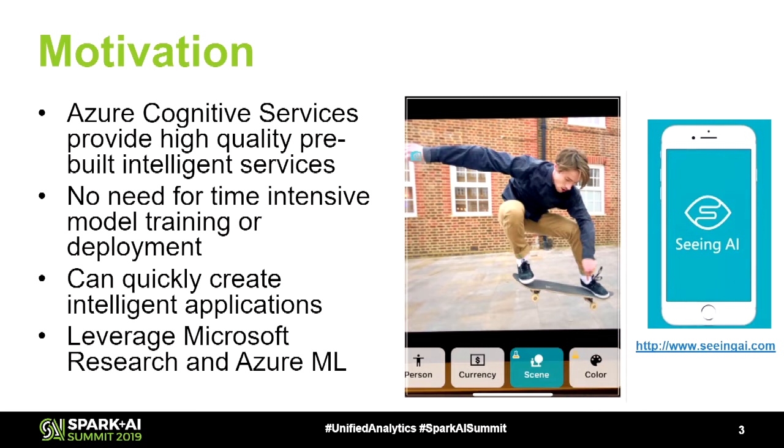For this particular functionality, it's not thousands of hours of dev time and training the model yourself. It's like two web calls — one to the computer vision service on Azure and then one to the text-to-speech service on Azure. So very quickly, you can create an app without having any knowledge of machine learning, just knowing what you want to do at a high level. This is what the cognitive services provide: no time-intensive training or deployment process. You can quickly create intelligent applications.